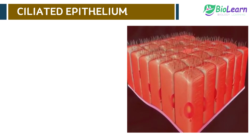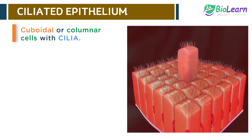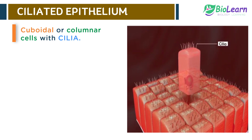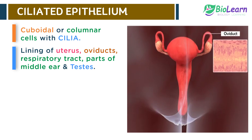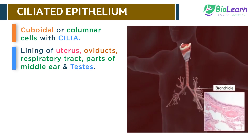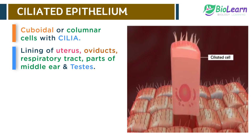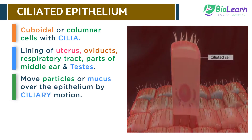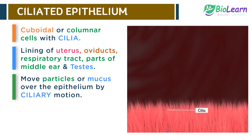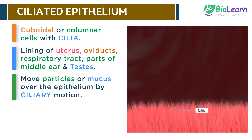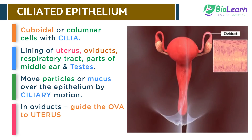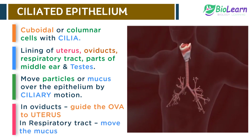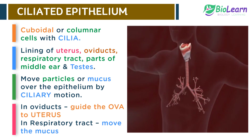Ciliated epithelium consists of cuboidal or columnar cells with cilia on their free surface. It is mainly present in the linings of the uterus, oviducts, respiratory tract, parts of middle ear and testes. The ciliated cells move particles or mucus over the epithelium in a specific direction by ciliary motion. In the oviducts, these cells guide the ova to the uterus, while in the respiratory tract, cilia move the mucus over the epithelial surface.